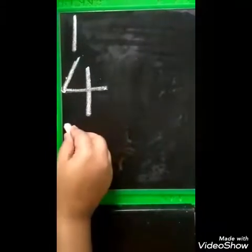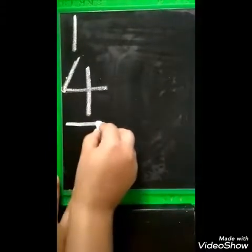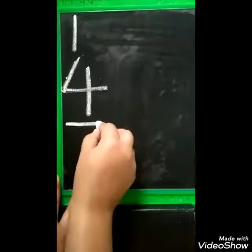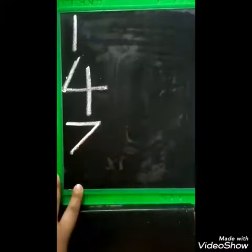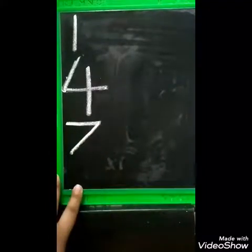And then number 7 — sleeping and slanting line backward, number 7.